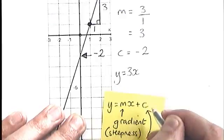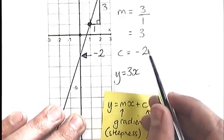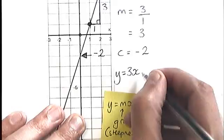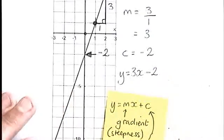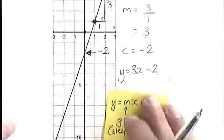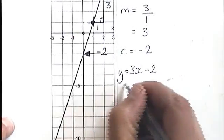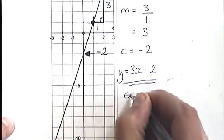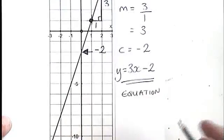And then I have to add c. Now since c is negative two, adding a negative is the same as taking away. So I'm going to write y equals 3x minus two. And that right there is the equation of the line.